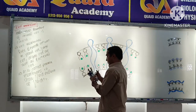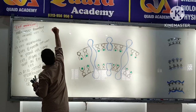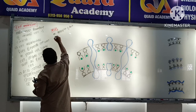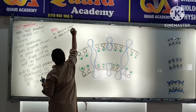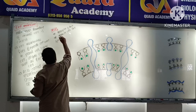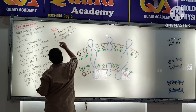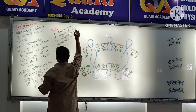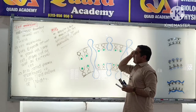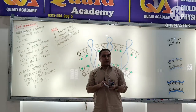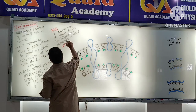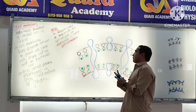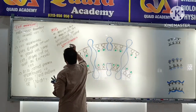MCQ number one: muscle fiber, or muscle cell. The specialized cell membrane of a muscle cell is called what? All cells have a cell membrane, but muscle cells have a special membrane called sarcolemma. The answer is sarcolemma.